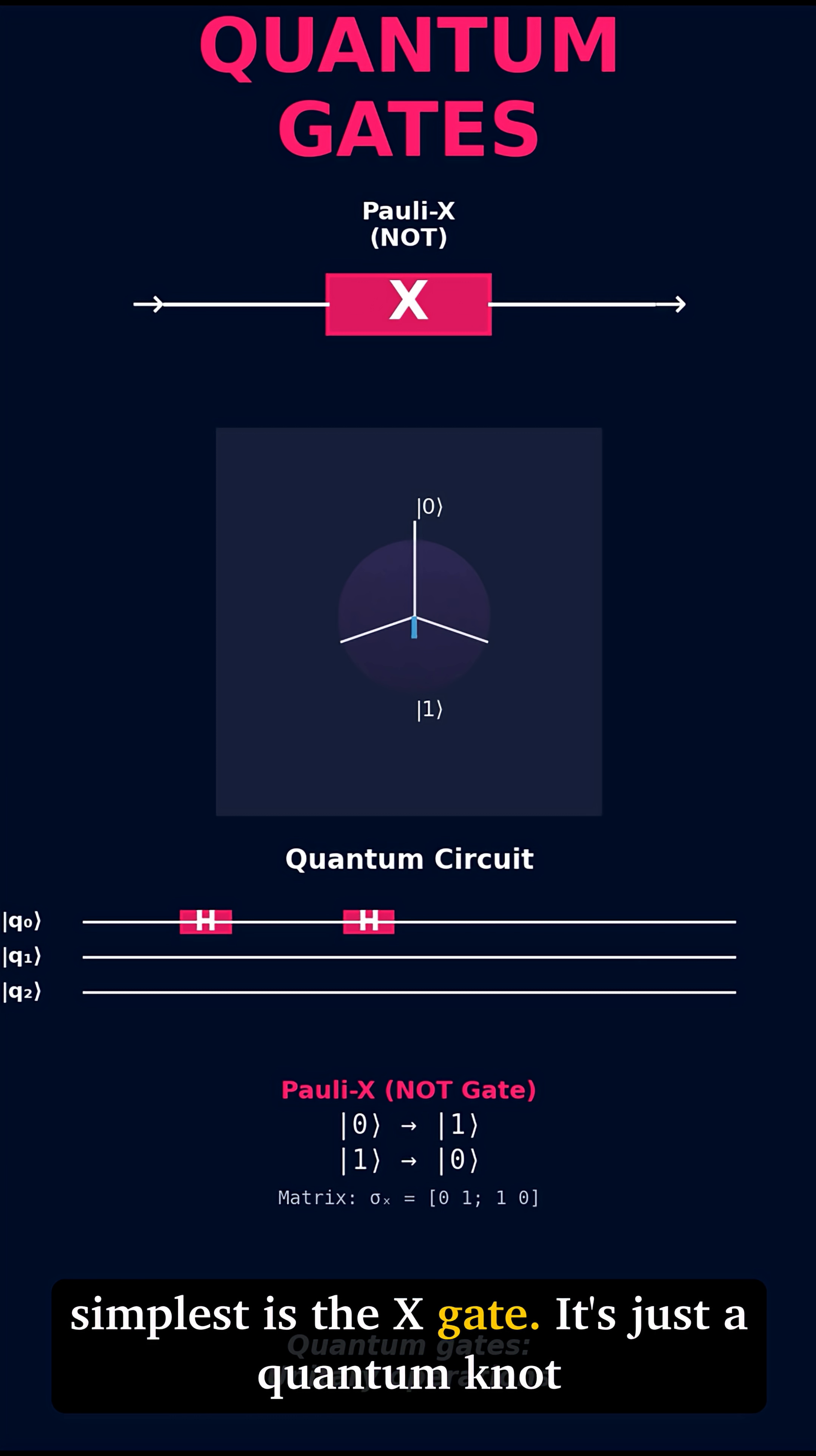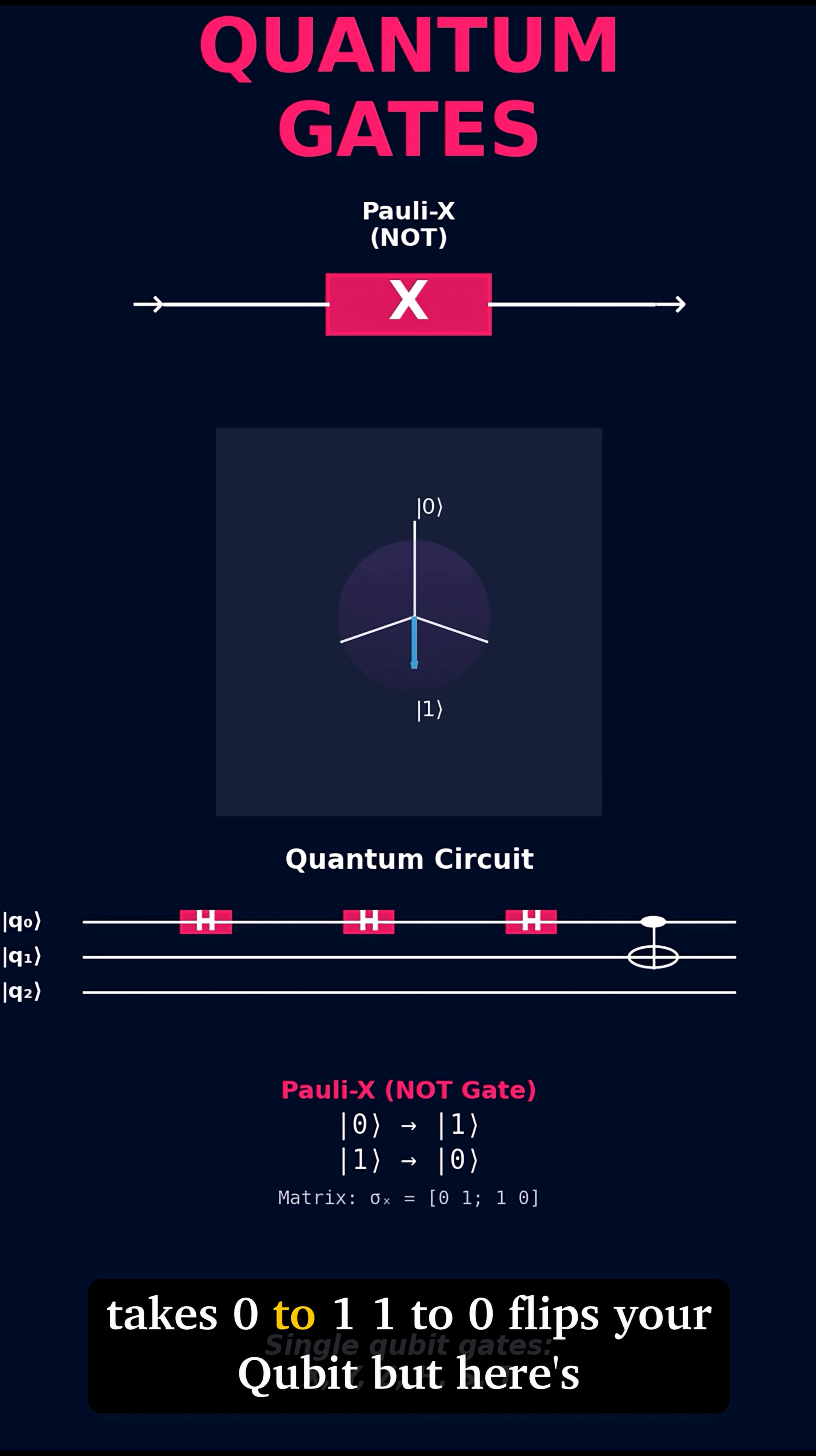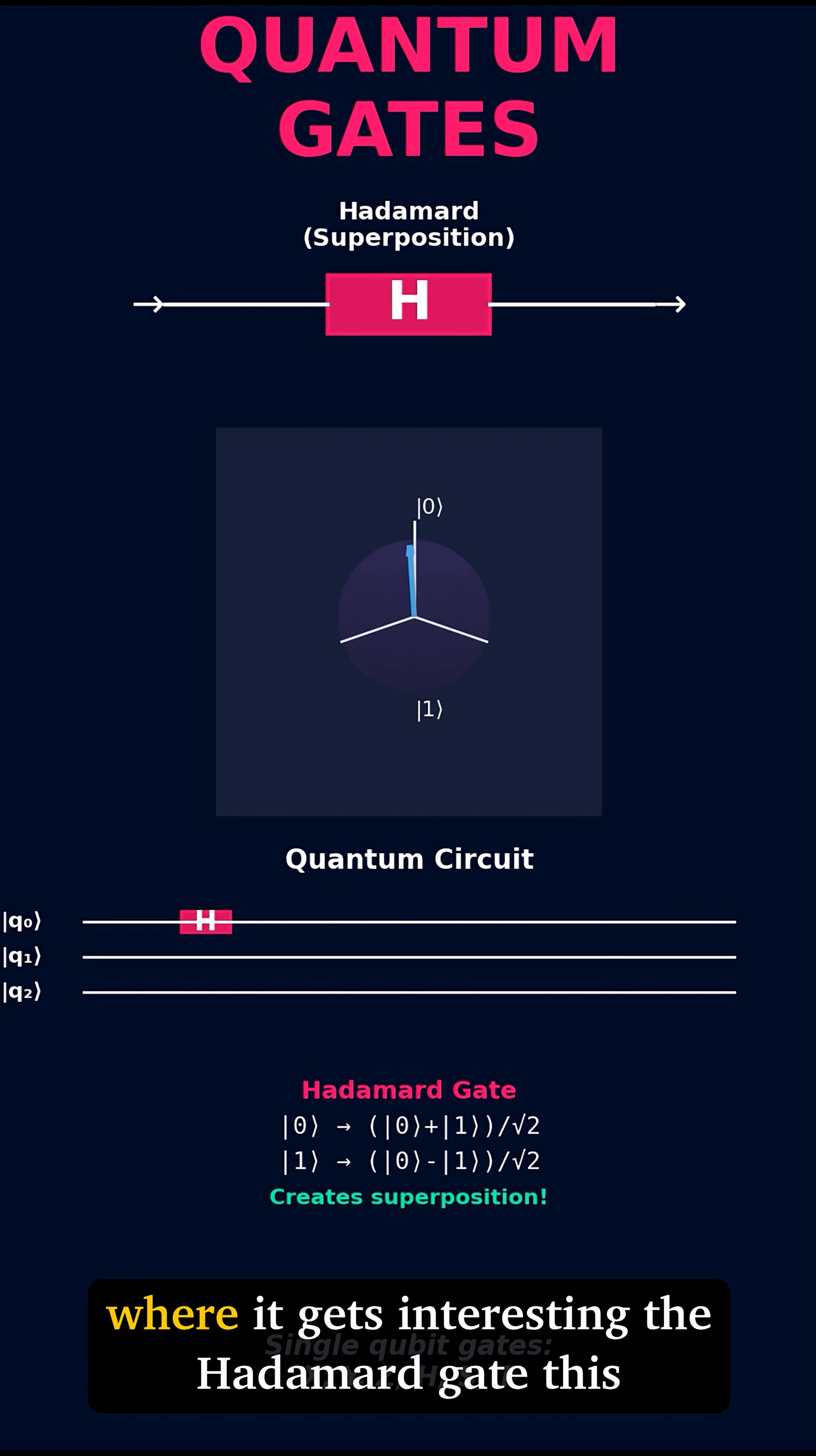The simplest is the X gate. It's just a quantum NOT. Takes 0 to 1, 1 to 0. Flips your qubit. But here's where it gets interesting.